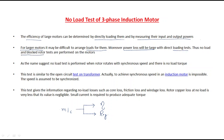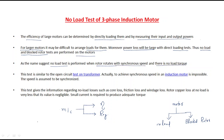To address this, we have two tests: the no-load test and the blocked rotor test. For any motor, these two tests are performed to understand its behavior. The no-load test, as the name suggests, has no load. The blocked rotor test means it is fully loaded. The no-load test is performed when the rotor runs at approximately synchronous speed with no load torque.